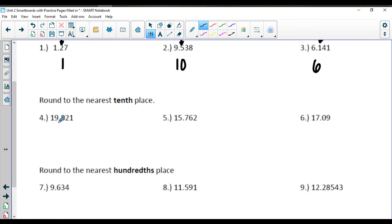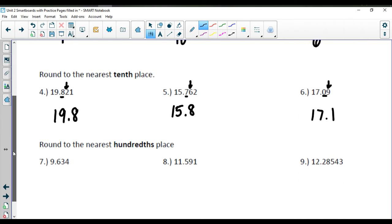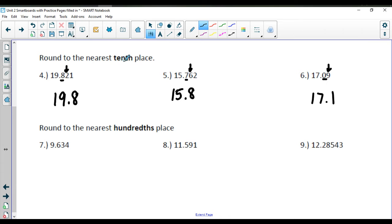Looking at the 10th place, we want to have one number after the decimal point here on all of these. So we'll look towards that second number. The second number is a 2, so this is going to stay at 19.8. The second number is a 6. That will actually make this bump up to a 15.8. The second number following this is a 9, so we're going to go up to a 17.1. There should be no other digits after your 10ths place here. So don't add a 0 to the end. We just want one digit after.